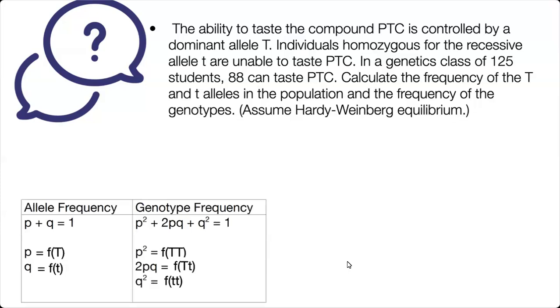So remember, we have two equations, the allele frequency equation, which is P plus Q equals 1, and the genotype frequency equation, which is P squared plus 2PQ plus Q squared equals 1.